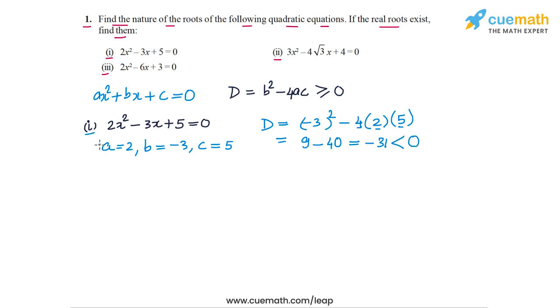So in part one the discriminant is less than 0, so the real roots of this quadratic equation do not exist. In other words, the roots are non-real. The nature of the roots: the roots are non-real in part one.